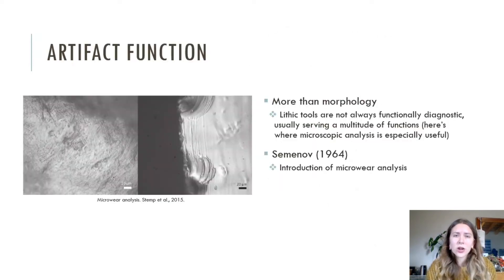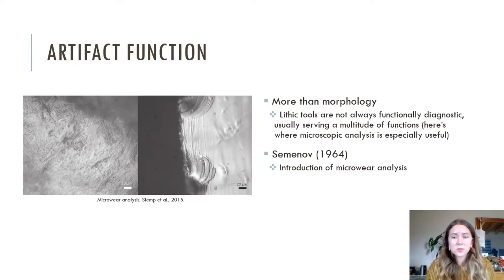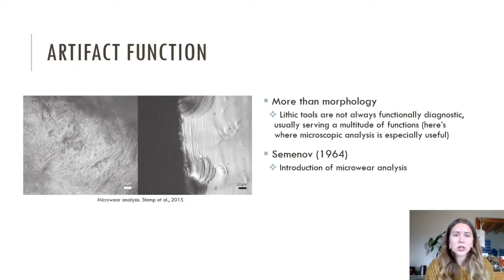Our topic today is about inferring the function of artifacts and sites, starting with artifact interpretation. A lot of extensive research has gone into how to properly interpret the function of stone tool artifacts, but prior to Semenov's 1964 study on microscopic analysis techniques, there was no real definitive way to interpret stone tool functionality, so most of it was based on morphology. Microscopic analysis will be the topic of next week's lecture, so tune in next week to hear about those techniques.